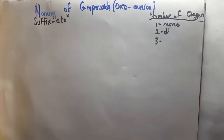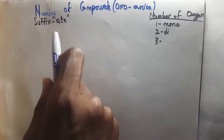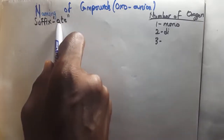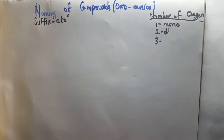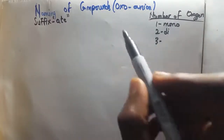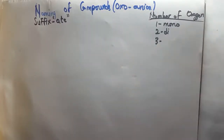Now there are certain rules you need to know when you are dealing with oxoanions. First of all, when you are naming them, the suffix or the name ends with A-T-E. Now the number of oxygens also — since it's an oxoanion, you expect that oxygen is in there, plus it's an anion. Anion is negatively charged.